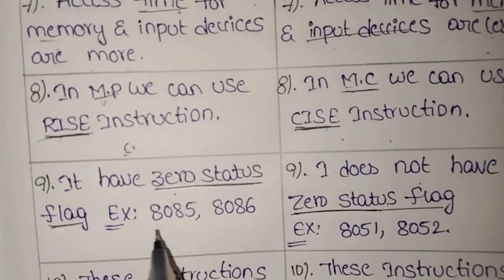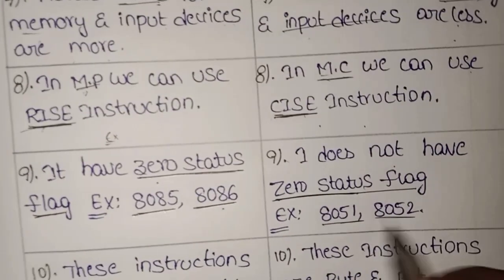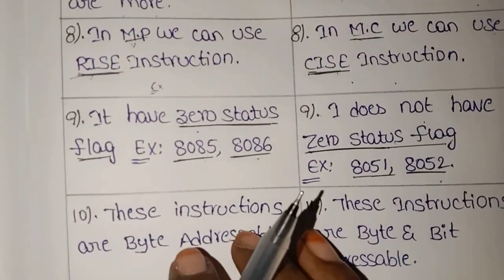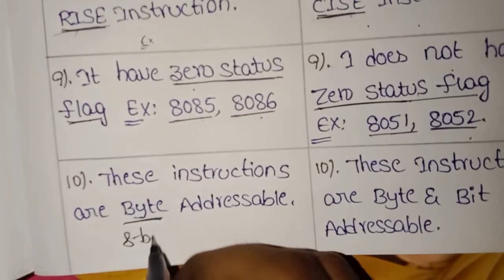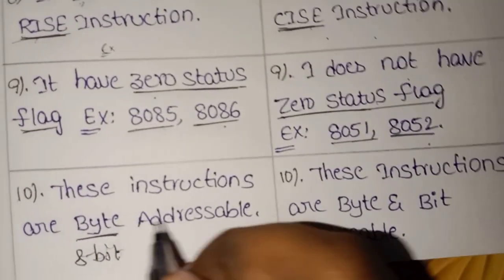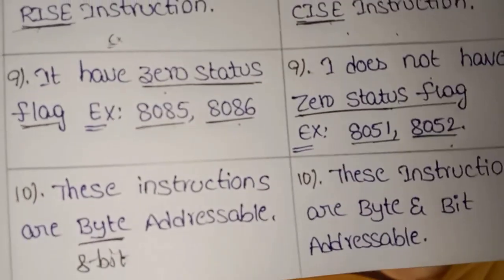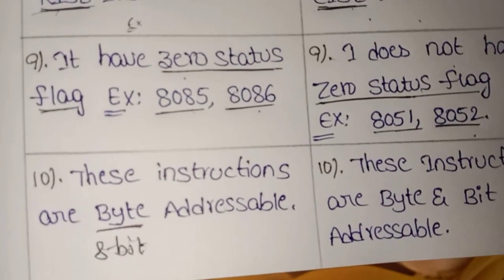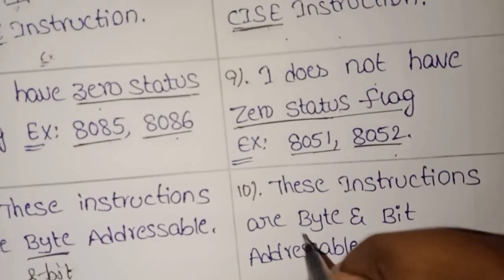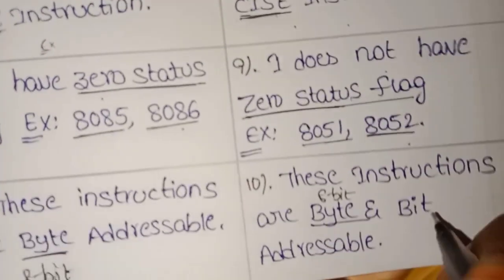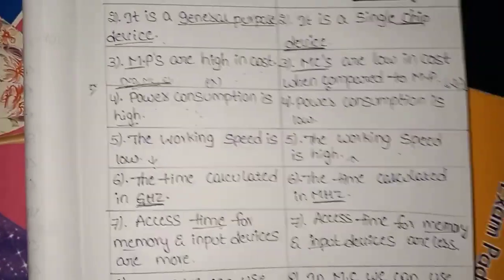Examples of microprocessors include 8085 and 8086. Examples of microcontrollers include 8051 and 8052. In microprocessors, memory is byte addressable, meaning 8 bits of data can be stored. In microcontrollers, memory is both byte and bit addressable, meaning any number of bits can be stored.